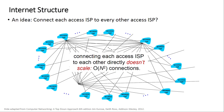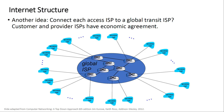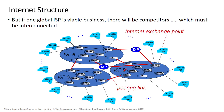How do we connect millions of access networks? Connecting each access ISP directly to every other results in O(n²) connections, which is not scalable. Another idea is to connect each access ISP to a global transit ISP — customers and providers have economic agreements. But if one global ISP is viable, there will be competitors, which must be interconnected. We call these interconnection points Internet Exchange Points (IXPs).